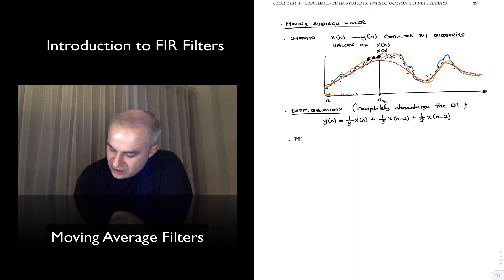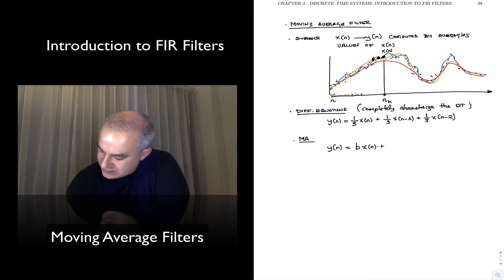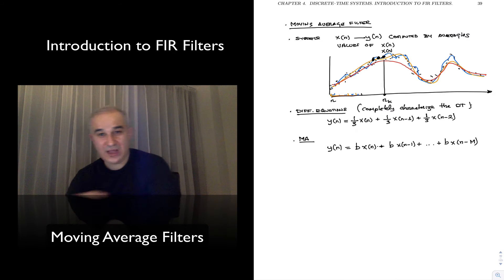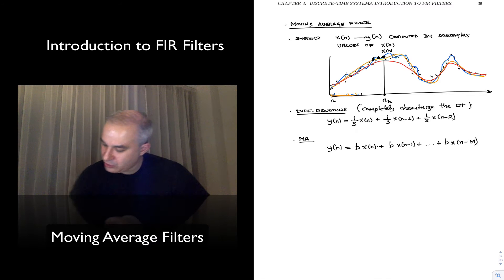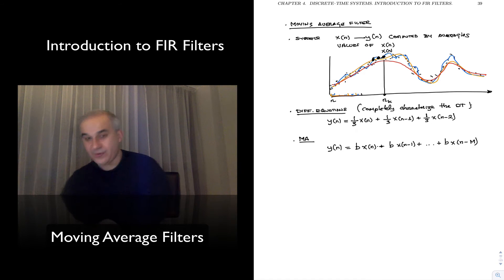And we can start thinking about this in general. You could think any moving average filter, we have the equation therefore: y of n equals b0 x of n plus b1 x of n minus 1 plus dot dot dot b_m x of n minus m. You can have a 10-point moving average, a 20-point moving average, right?